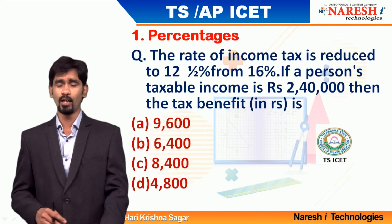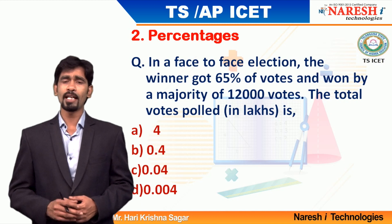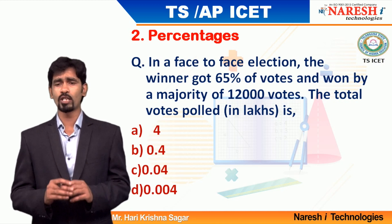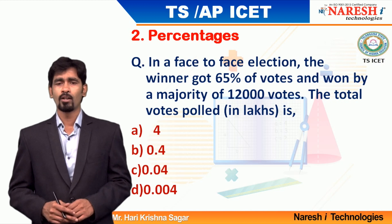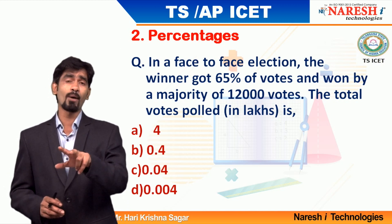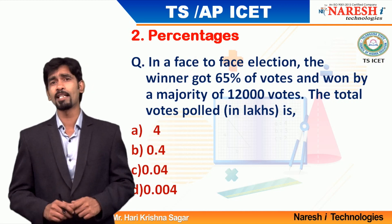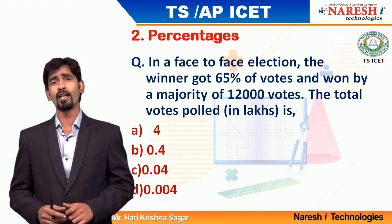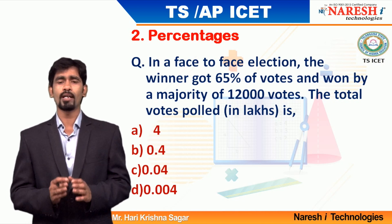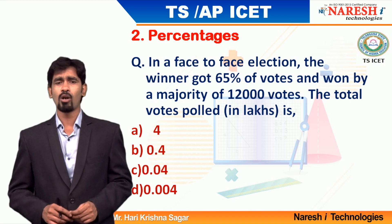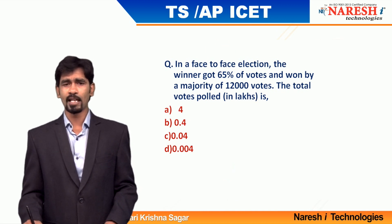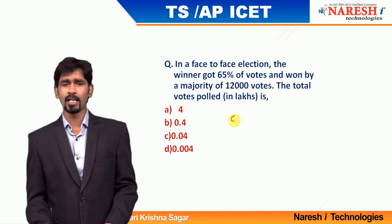Let us move on to the next question based on the unitary method, question number 2. In a face-to-face election, the winner got 65 percentage of the votes and won with a majority of 12,000 votes. What is the number of votes polled in terms of lakhs? ICET always plays with the zeros — please be careful with this kind of question. They give information in thousands but ask the answer in lakhs, so be careful with decimal and fraction conversions.